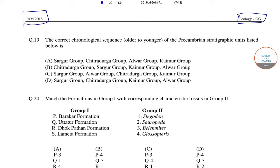Here we have to find which of the following is the correct chronological sequence — that is from older to younger — of the Precambrian stratigraphic units listed below. The correct answer is option A, as the Sargur group is about 3300 to 3000 million years ago.